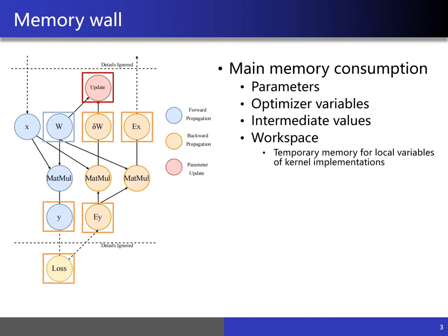As shown on the left in the figure, except for X and W, the rest of the values are generated at runtime, which can lead to 3 to 4 times more runtime memory than the model itself.